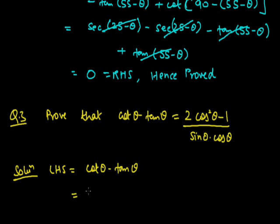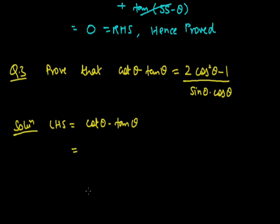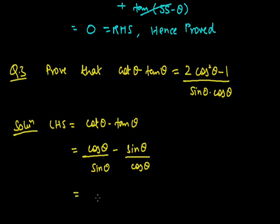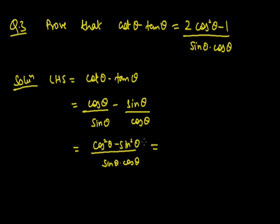Since our RHS is in terms of sin and cos, we convert the LHS accordingly. cotθ = cosθ/sinθ and tanθ = sinθ/cosθ. Taking LCM as sinθ · cosθ, the numerator becomes cos²θ - sin²θ, and the denominator is sinθ · cosθ, which matches the RHS denominator.